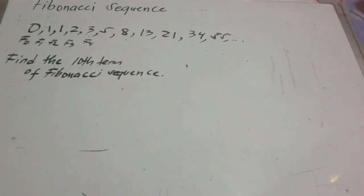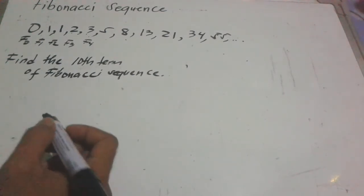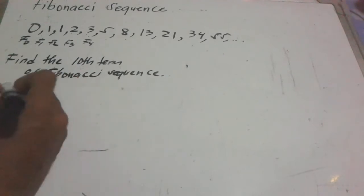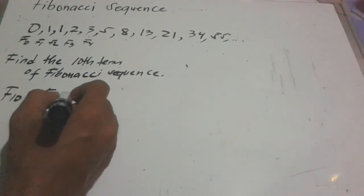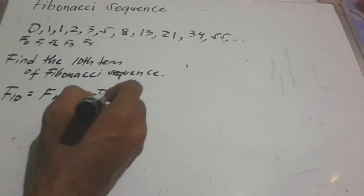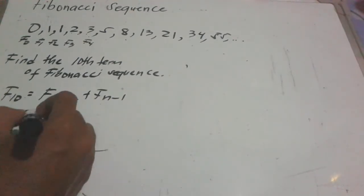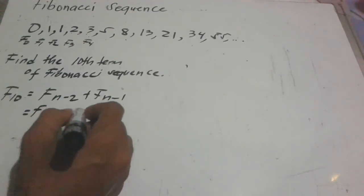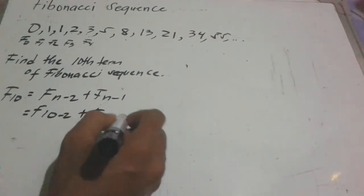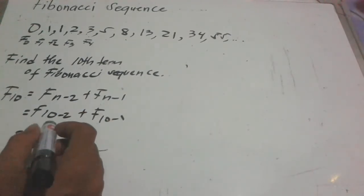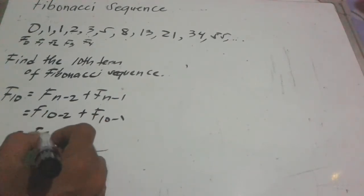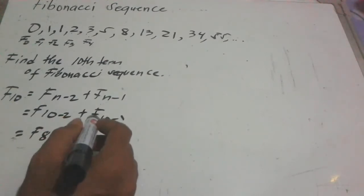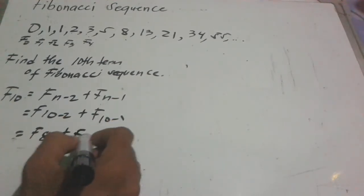What if we find the 10th term of the Fibonacci sequence? Using the formula, F sub 10 is equal to F sub (n minus 2) plus F sub (n minus 1). So we have F sub (10 minus 2) plus F sub (10 minus 1), which is F sub 8 plus F sub 9. We know that F sub 8 equals 21.